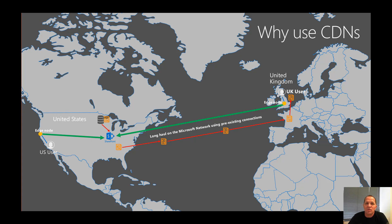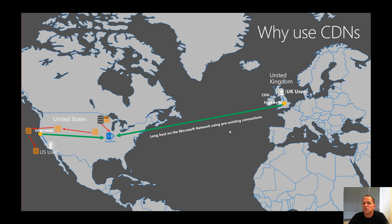Obviously from that perspective, the latency and performance would be pretty slow. The same would happen for the United States user — it's going across the network too. Yes, it may be a little bit faster for the US user due to the shorter haul, but without CDNs, if you have ten 1MB files for example, that's 10MB traversing across the line, which impacts performance.